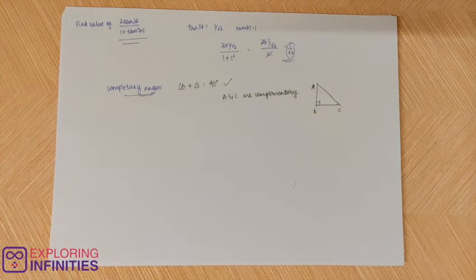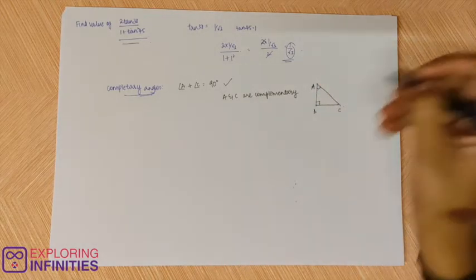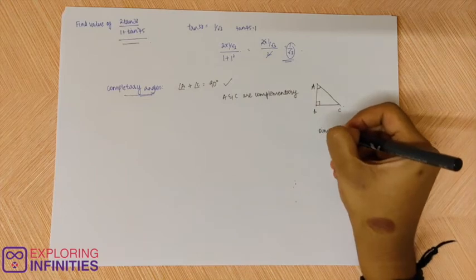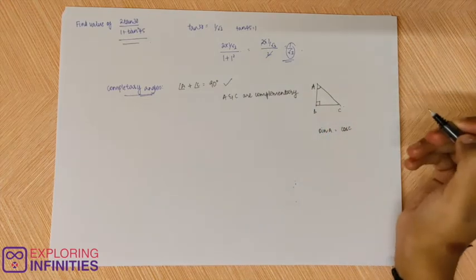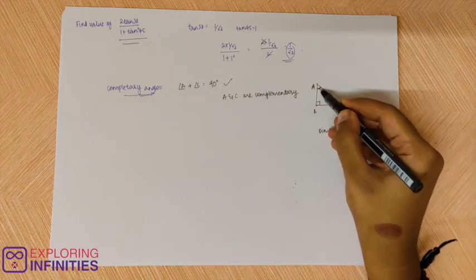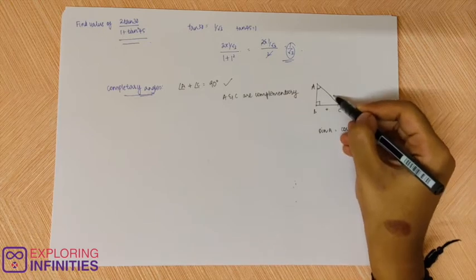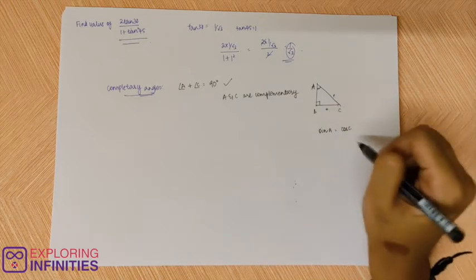So now we will use this concept in trigonometry. You know that sine of angle A, we already know that sine of angle A is cos of angle C. How? Because sine of angle C is opposite by hypotenuse and cos of angle C is adjacent by hypotenuse, so the ratio is same so the angle will be same.